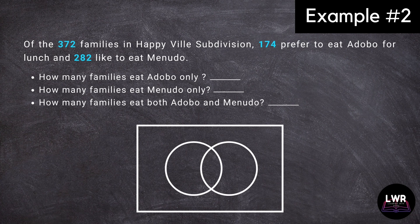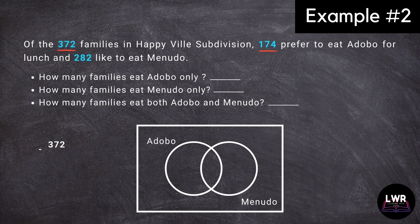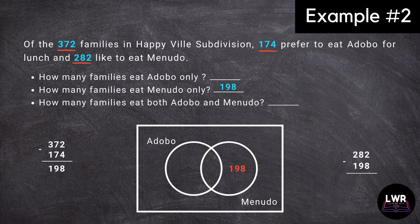Let us have the diagram. We will name the circle at the left side to represent the data for adobo, and the circle at the right side for menudo. In order to get the data for the number of families that eat menudo only, we will have 372 minus 174, which is equal to 198. Since 282 like to eat menudo, we will subtract 198 from it to get 84, which we will place inside the overlapping circles, or the number of families that eat both adobo and menudo.